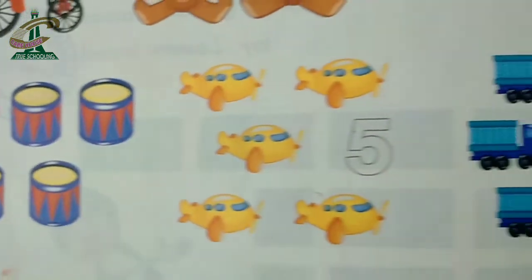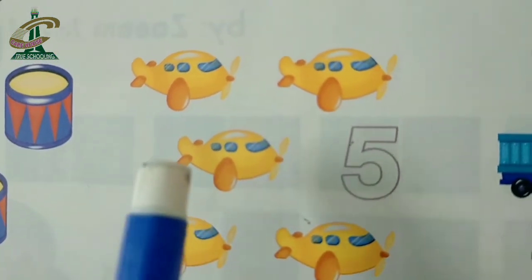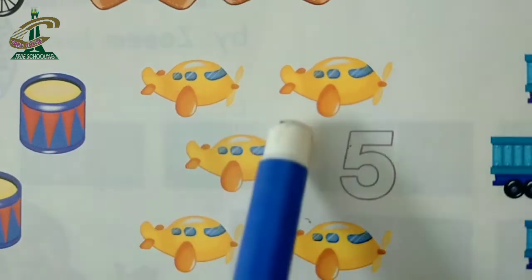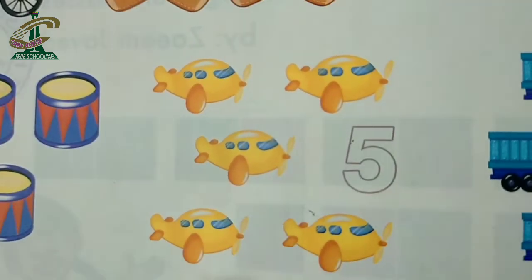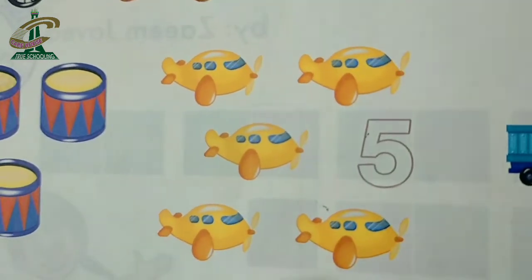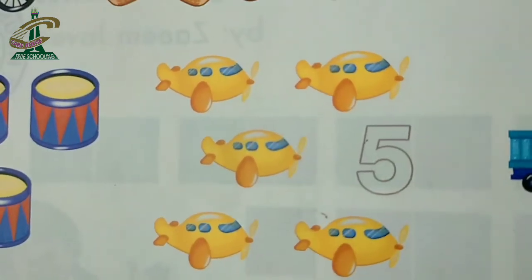Now what comes after four? Which number? First you have to count plants. One, two, three, four, five. Five plants. Five plants.